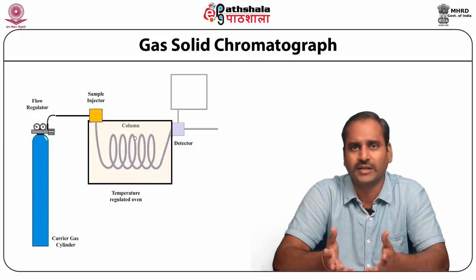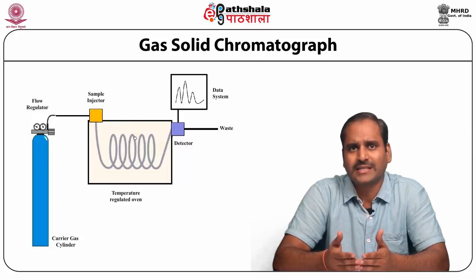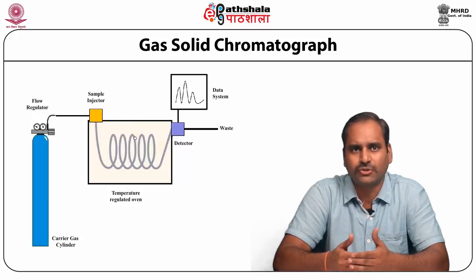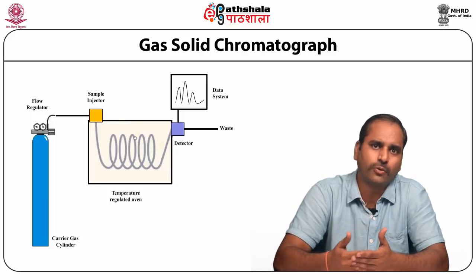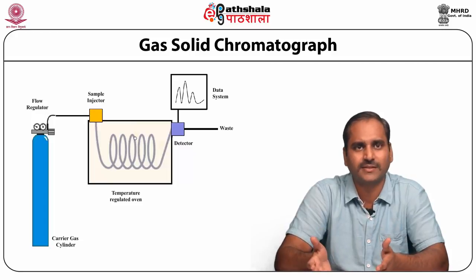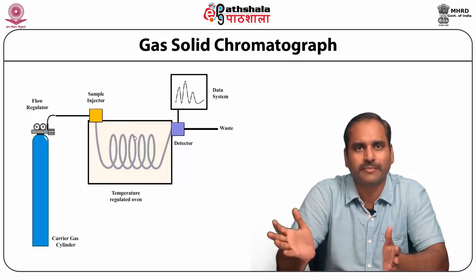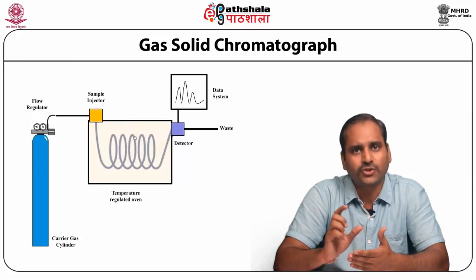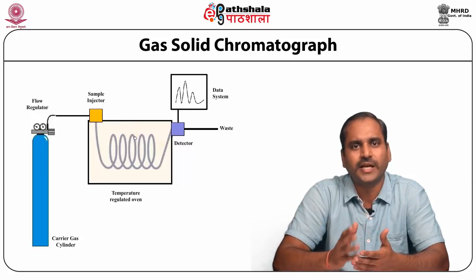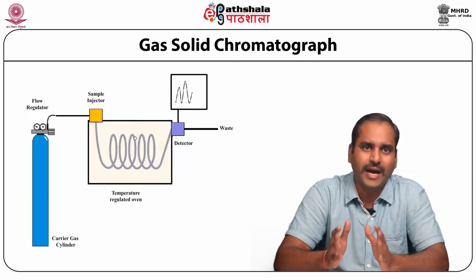The gas chromatograph equipment generally consists of: a cylinder containing the carrier gas; a flow regulator controlling the carrier gas flow; an injector for loading the sample; a gas chromatographic column where separation takes place; a temperature regulated oven maintaining temperature during the separation process; a detector at a short distance from the column for detection of the analyte after separation; and a data system or recorder where data is recorded and generated.